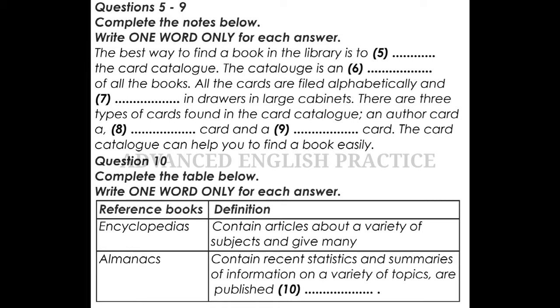Let's see some major types of reference books. First, dictionaries. Dictionaries are books that list and give the meanings of the words in a language. They also give the pronunciation of words, which are listed alphabetically in a dictionary.